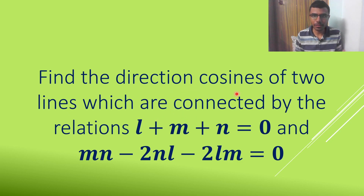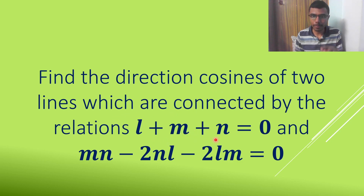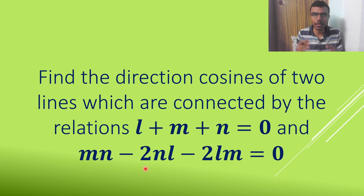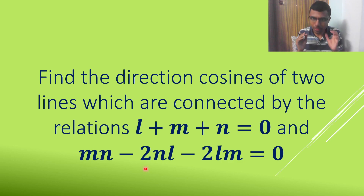They are asking us to find out the direction cosines, where we are given some relations like L plus M plus N equal to 0 and a second equation. We'll simplify the first one — write L as minus M minus N and substitute it in the second to find out the relation between M and N. We would get two cases, and using those two cases we would get two different direction cosines. That's how I am going to proceed.